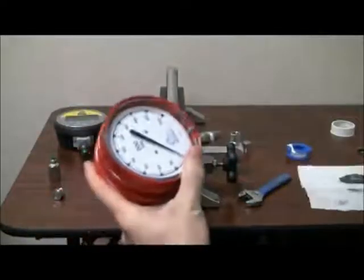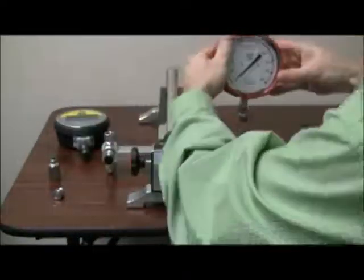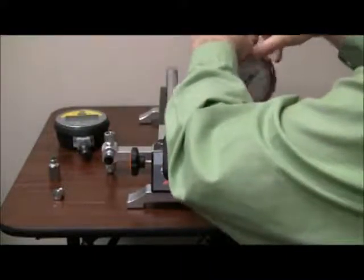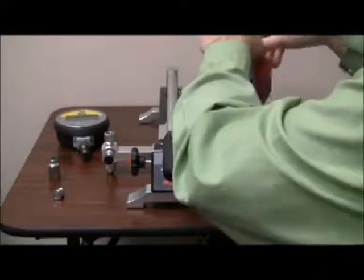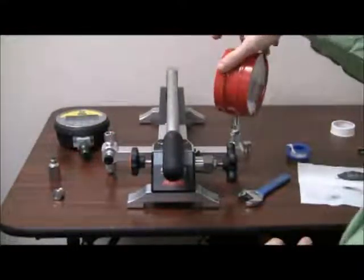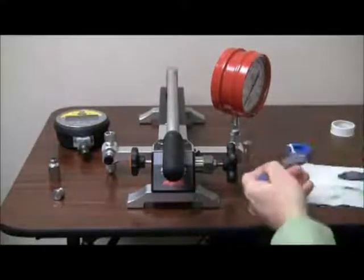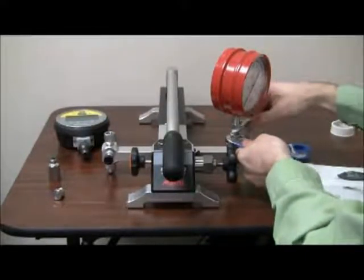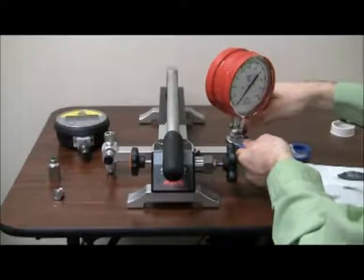I'm now going to install the gauge hand tight on the comparator. Using a backup wrench, you can use a 3/4 inch crescent wrench or 19 millimeter. I'm barely tightening the gauge so it has a good seal.